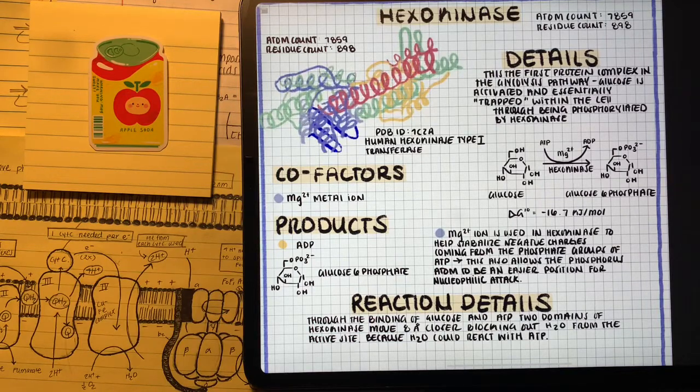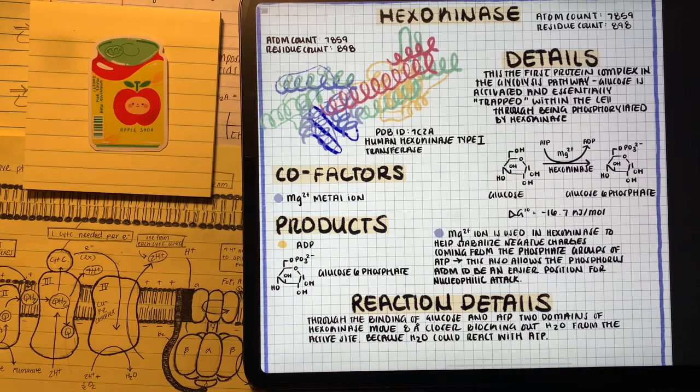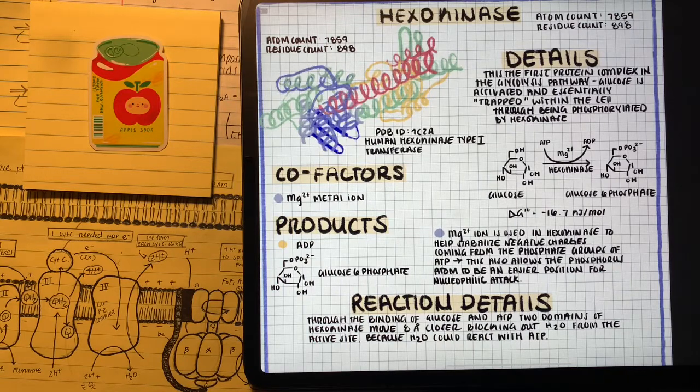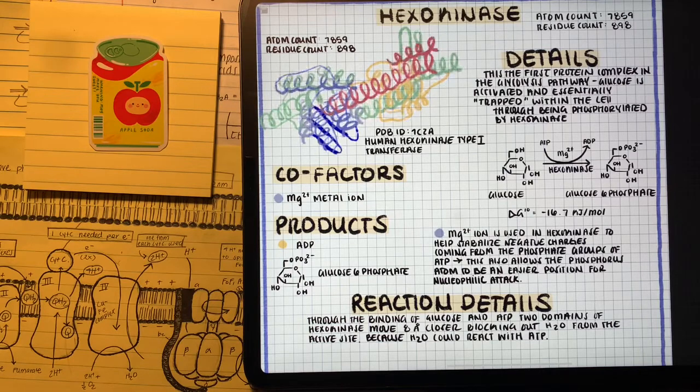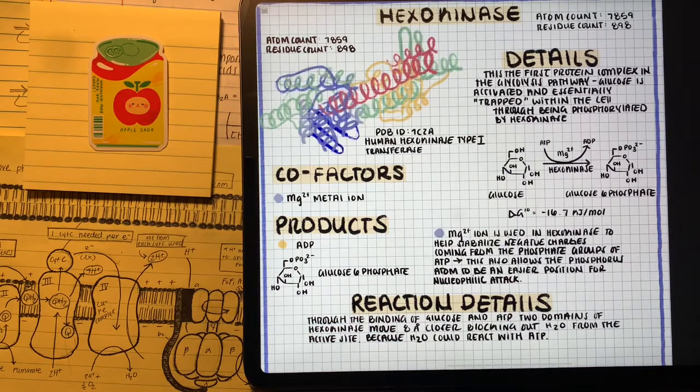The first enzyme complex in glycolysis is hexokinase. Hexokinase is really important because it helps trap glucose in the cell by phosphorylating it to glucose 6-phosphate. The reason it's called glucose 6-phosphate is because we're phosphorylating that 6-carbon on glucose. This happens by taking a phosphoryl group from ATP to glucose.